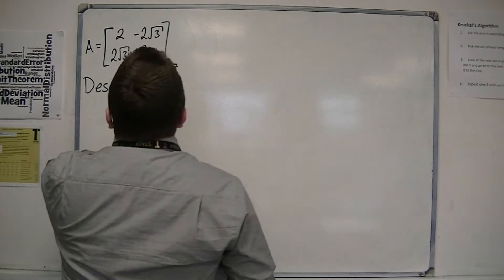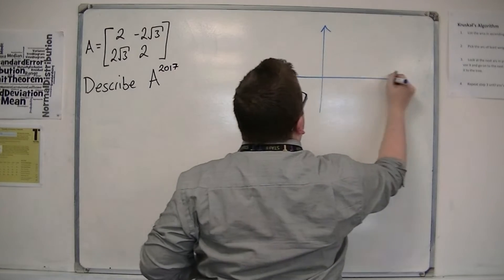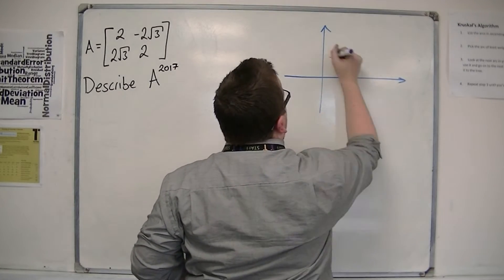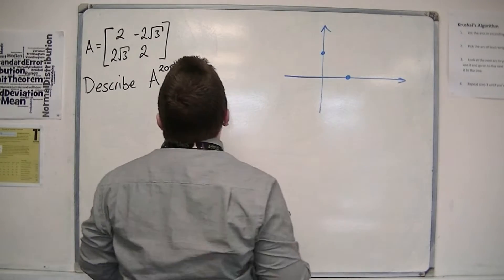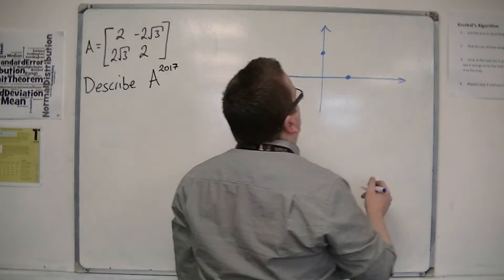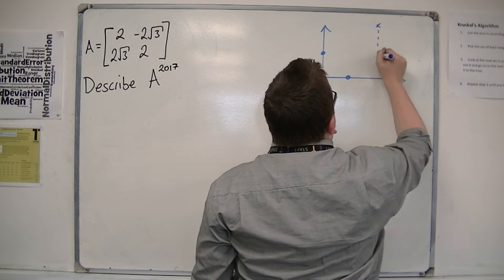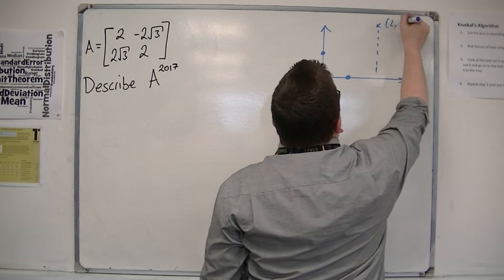So what we're going to do first is look at where our points have gone to. So I've looked at 1, 0 and 0, 1. So 1, 0 is going to 2, 2 root 3. So that's up here somewhere. So this is 2, 2 root 3.